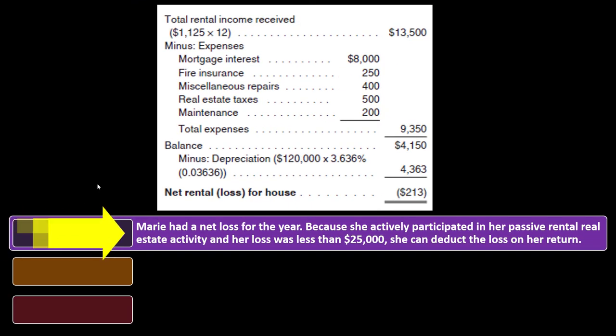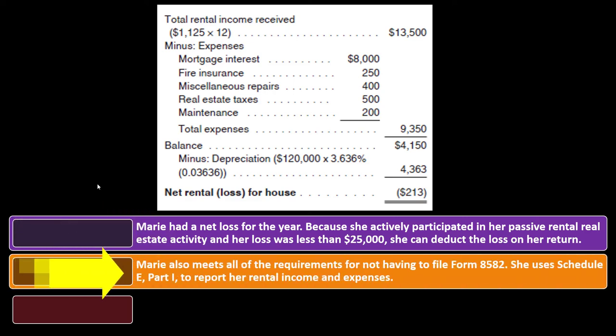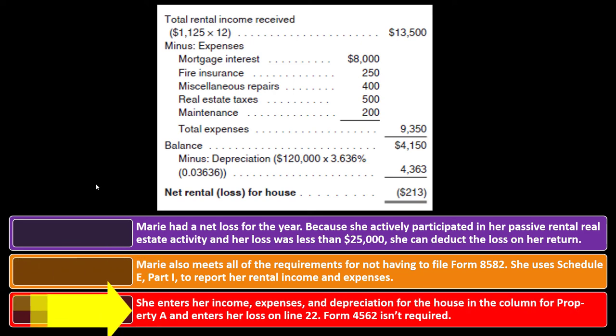Mary had a net loss for the year. Because she actively participated in her passive rental real estate activity and her loss was less than $25,000, she can deduct the loss on her return. Mary also meets all the requirements for not having to file Form 8582. She uses Schedule E, Part 1, to report her rental income and expenses, entering her income, expenses, and depreciation for the house in the column for Property A and entering her loss on Line 22. Form 4562 is not required.